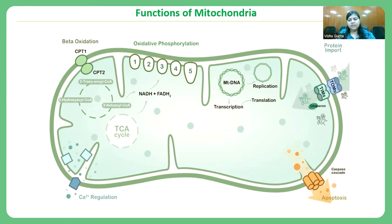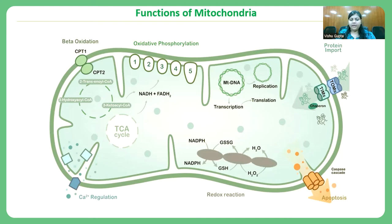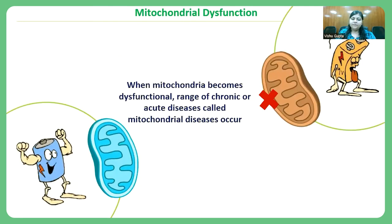Several proteins are imported into the mitochondria through intermembrane proteins like TIM and TOM. There is also maintenance of redox potential inside mitochondria through redox reactions. If there is any dysfunction, or if any of these functions fail to perform, then there is a range of acute or chronic diseases that might occur, which are called mitochondrial disorders.